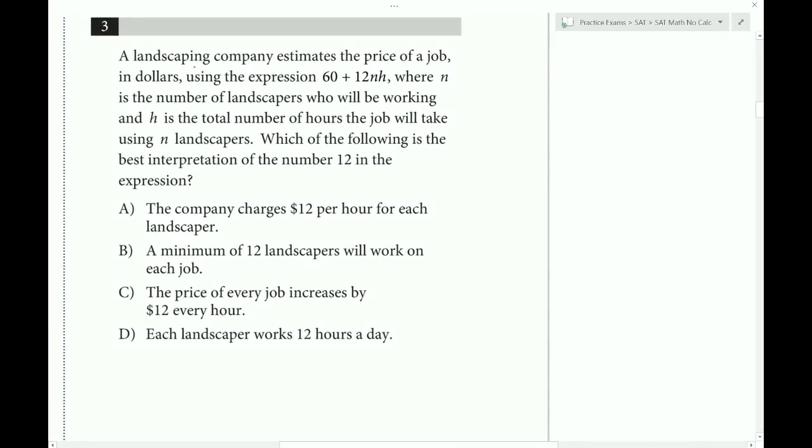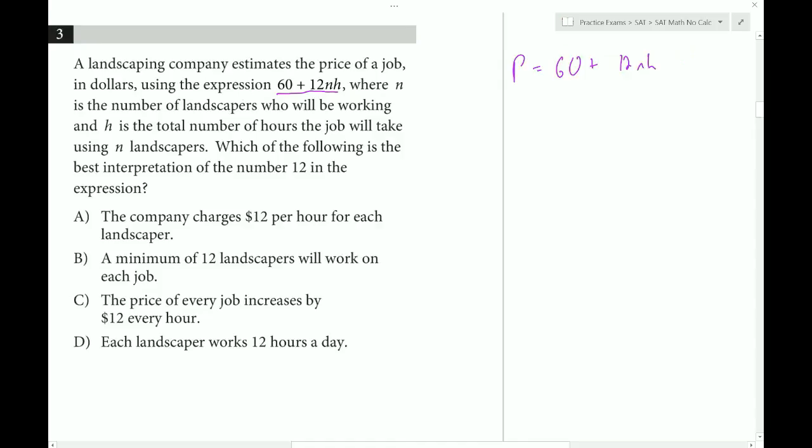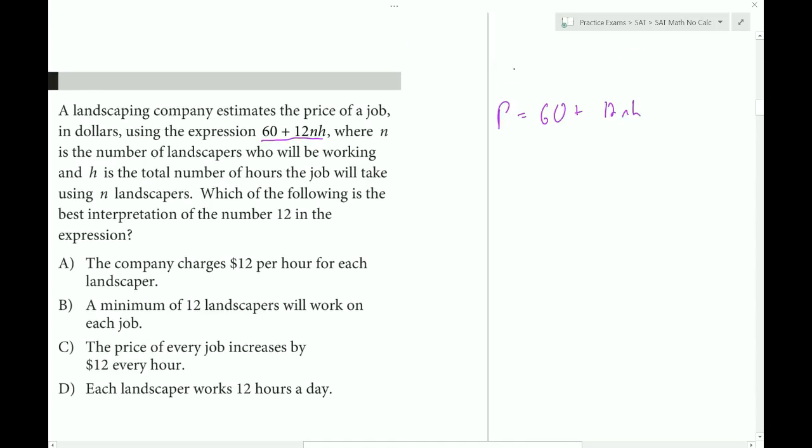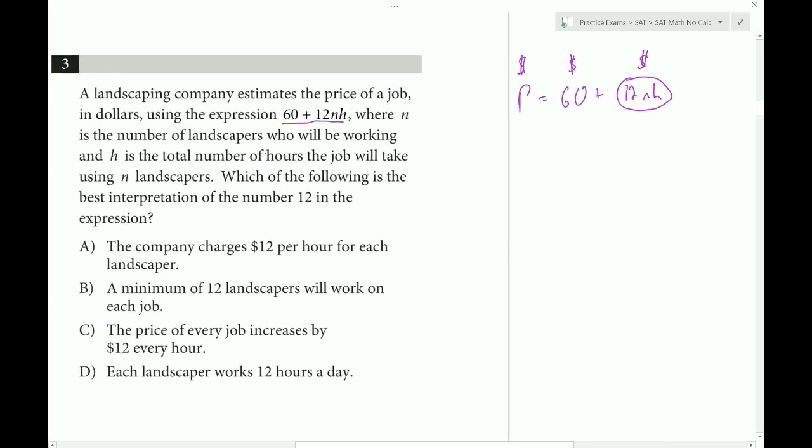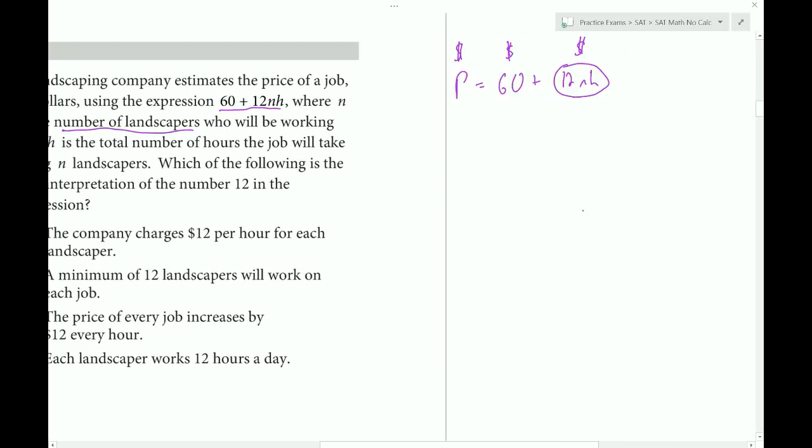Question 3. A landscaping company estimates the price of a job in dollars using the expression 60 plus 12NH. The price equals 60 plus 12NH, and the price is in dollars, so each term is also in dollars. N represents the number of landscapers.